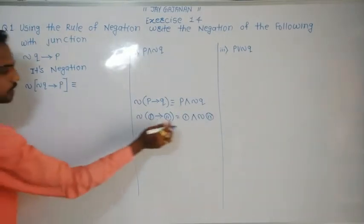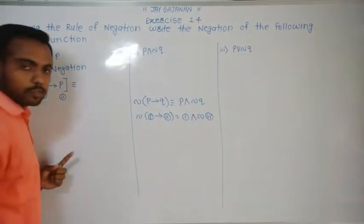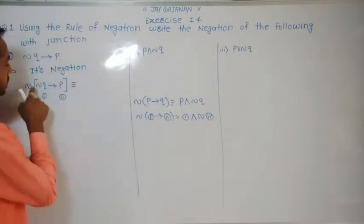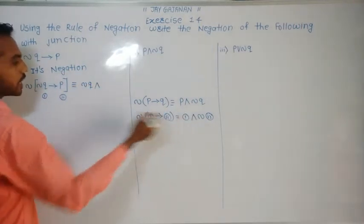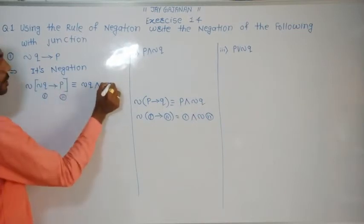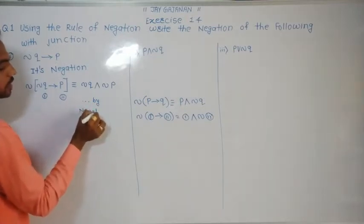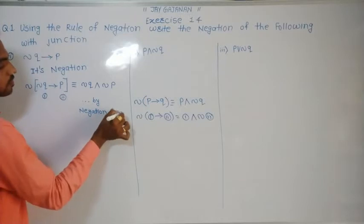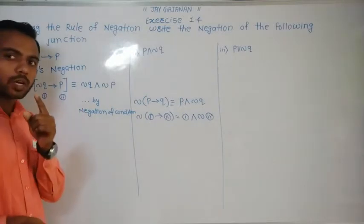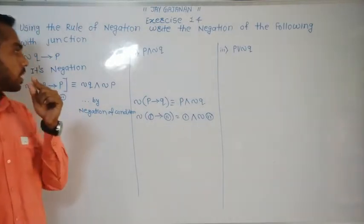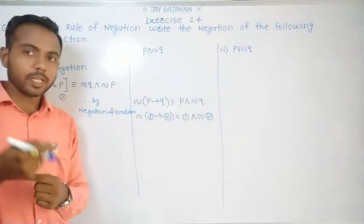Let us consider 1 means negation Q and 2 means P. Applying the negation of implication, the first part is negation Q and negation of P. This example can also be solved by first applying the conditional law and then applying the negation of conjunction.